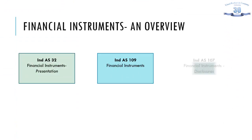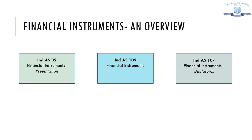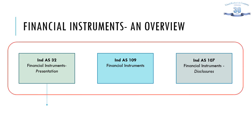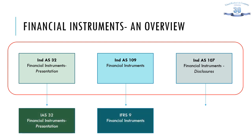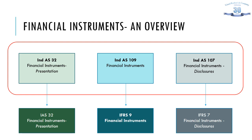Financial instruments are perceived as one of the most complex topics in Indian accounting standards. It is worth mentioning that India has been one of the leaders in terms of implementation of these standards. Globally, these standards are replicated by IAS 32, IFRS 9 and IFRS 7. IFRS 9 is originally effective globally from 1st January 2018. However, in India, the Phase 1 companies transitioned to IND AS with effect from 1st April 2016, with an opening balance sheet of April 2015. Therefore, India adopted these standards much before their global implementation.